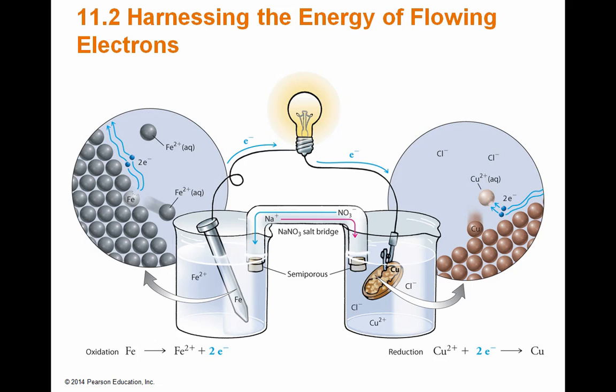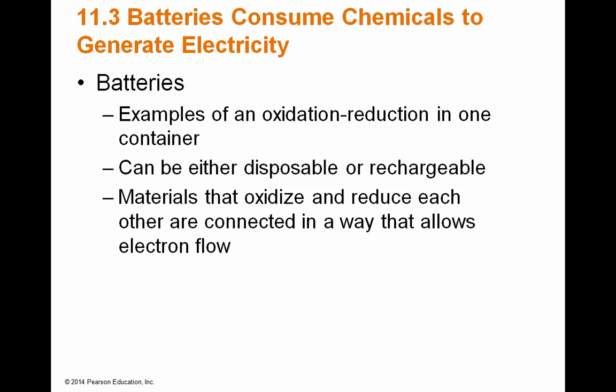Batteries are an excellent example of an oxidation reaction that occurs in a container. These batteries can be either disposable or rechargeable — we'll talk about the pros and cons of each. But basically they're set up so that materials will oxidize and reduce each other in such a way that they force electrons to flow in one direction. You're consuming a chemical in order to generate electricity.